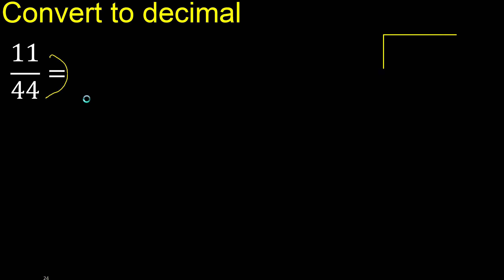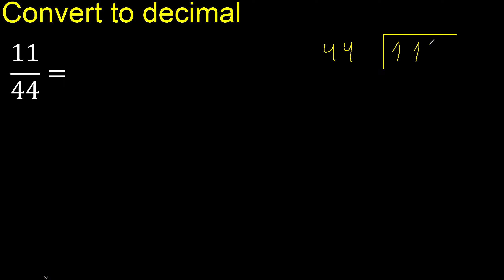11 divided by 44. 11 is less, therefore complete — always complete with 0. Here, 0 point.